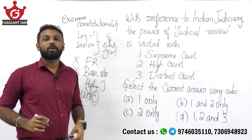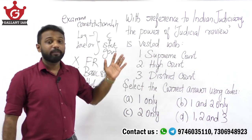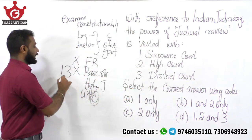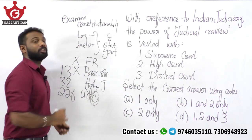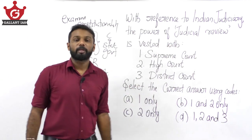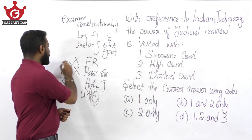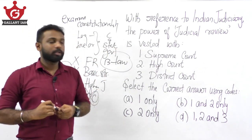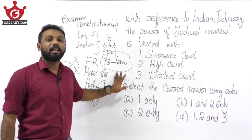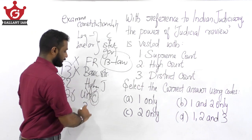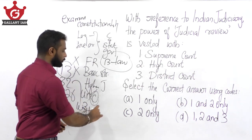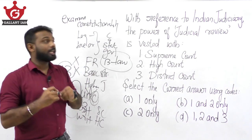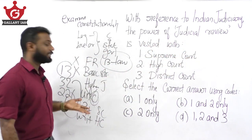This power of the judiciary is called judicial review. Please note that even though judicial review is not explicitly mentioned in the Constitution, articles like Article 13, Article 32, and Article 226 confer this power. Article 13 says that if a law violates the principles of fundamental rights, it can be declared null and void. Article 32 is the writ jurisdiction of the Supreme Court and Article 226 is the writ jurisdiction of the High Court.